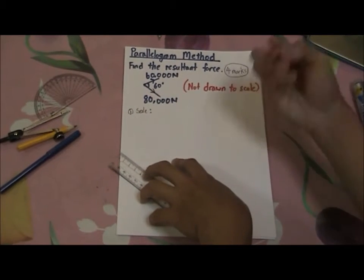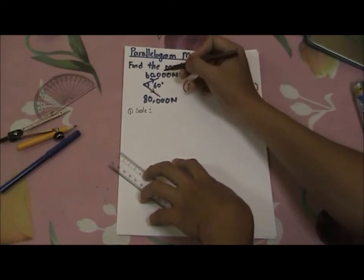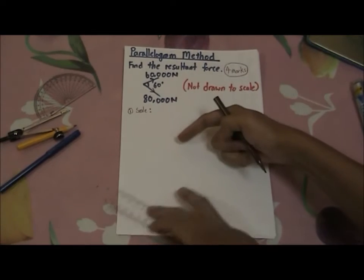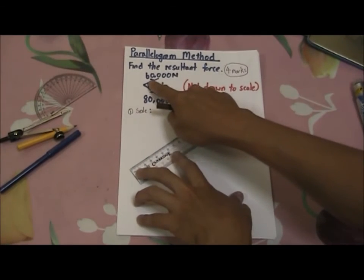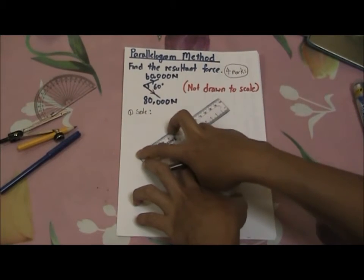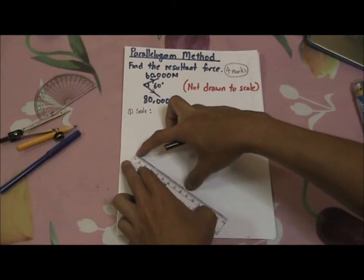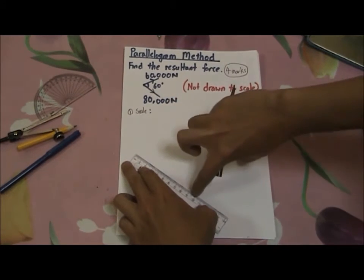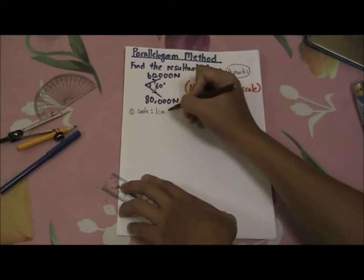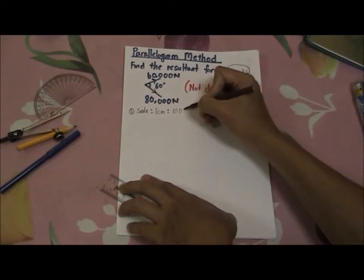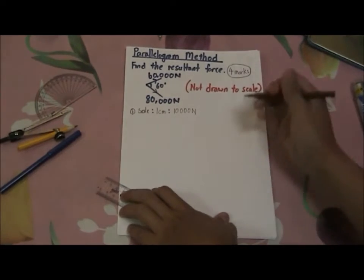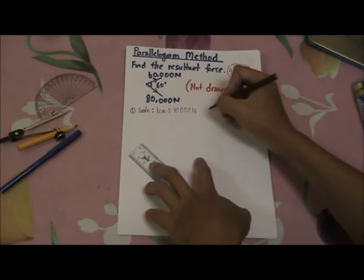You need to show the marker what is your scale. So in this case, it's 60,000 newton and 80,000 newton and you are given this space here. So if I do an estimation, if I use 1 cm is to 10,000 newton, I will need about 6 cm here and about 8 cm here. This scale is good because I fully maximize the area that is given. So now this will be where the first mark lies.